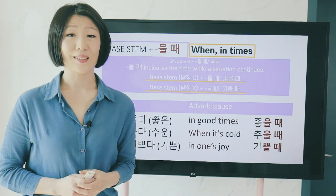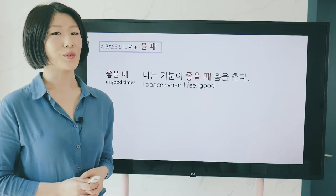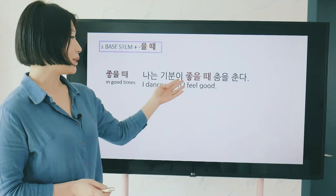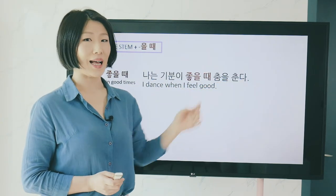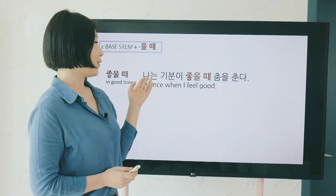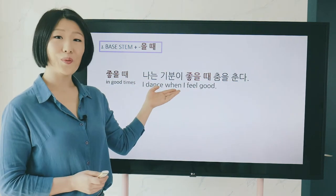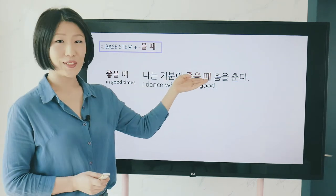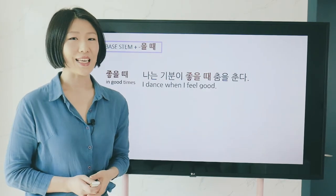Let's look at these in sentences. 나는 기분이 좋을 때 춤을 춘다 — 'I dance when I feel good.' 기분이 좋을 때 춤을 춰요.